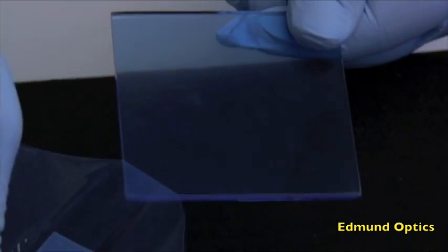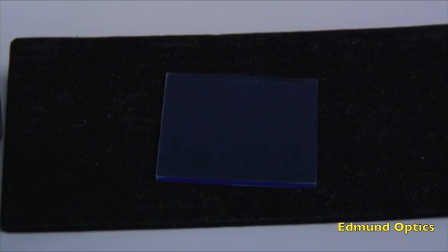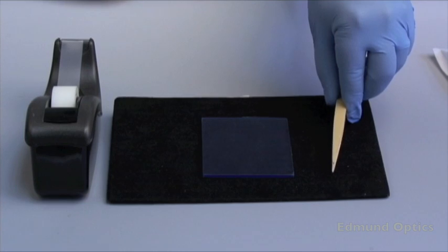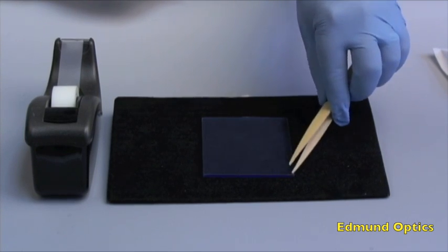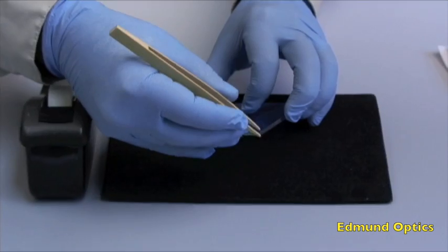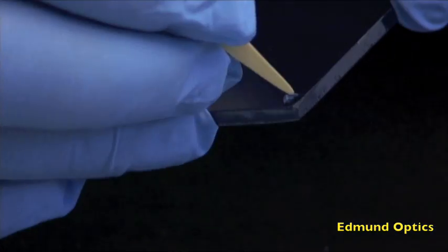Second, I'll show you how to use bamboo tweezers to remove the protective plastic coating from the other surface of this window. Try to get a firm grip on one end of the plastic with the tweezers, then slowly pull backwards until all plastic is removed.